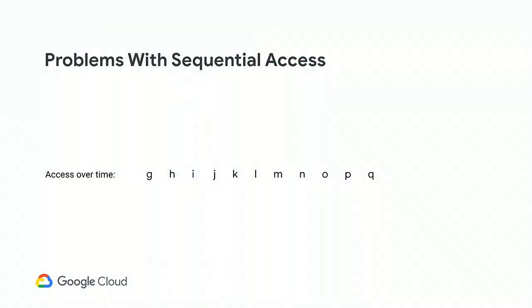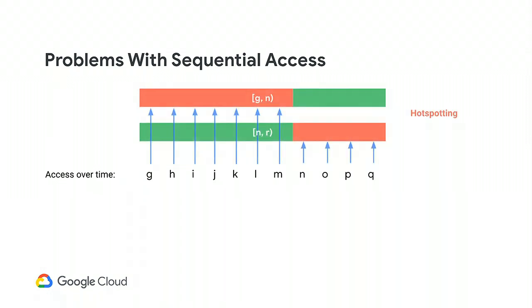To get the best scaling, distribute load evenly. Sequential access — reading or writing objects in lexicographic order — is a key cause of hotspotting. Even if accesses span two shards overall, at any given moment you're hitting one shard at a time, so you don't get the benefit of both shards and are bound by the single-shard limit. This is the core hotspotting problem.